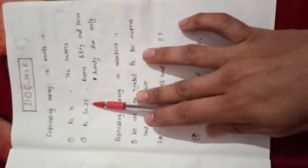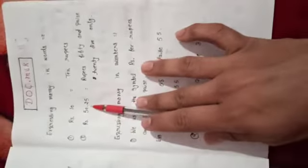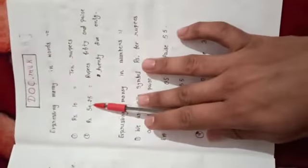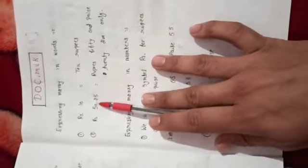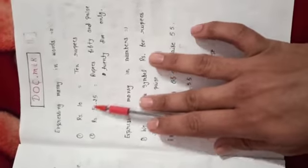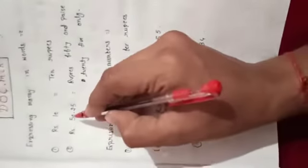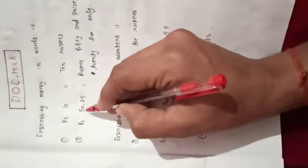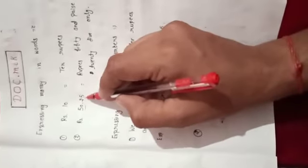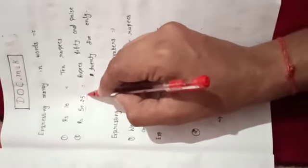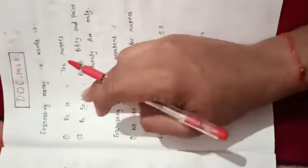The next one is rate 50.25. The number written on the right side of the point is called paise, and the number written on the left side of the point is called rupees.